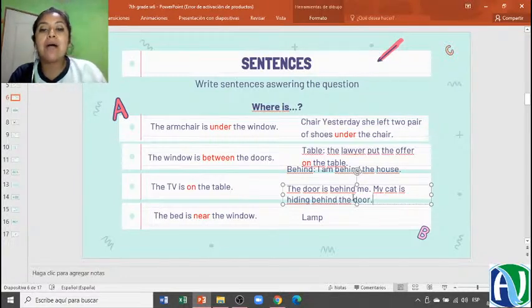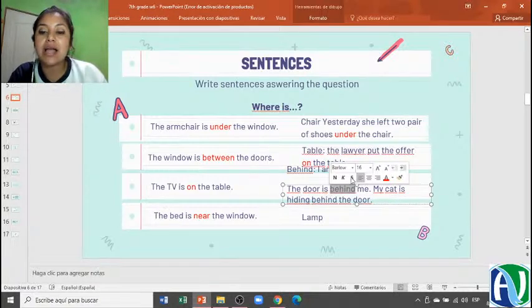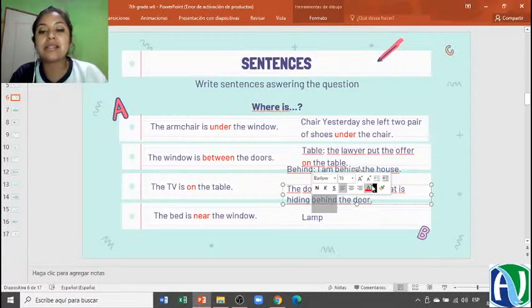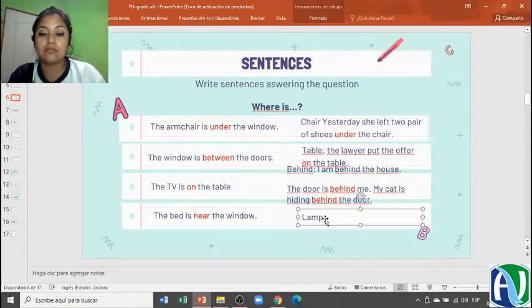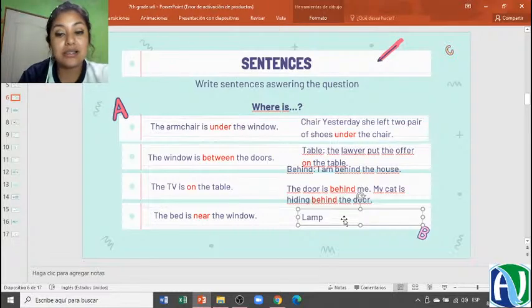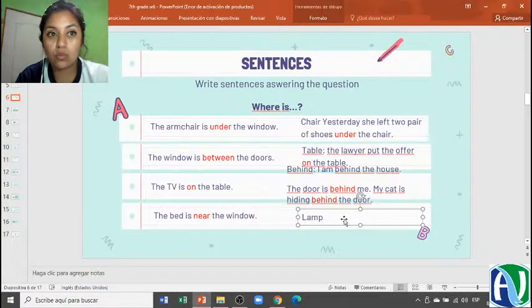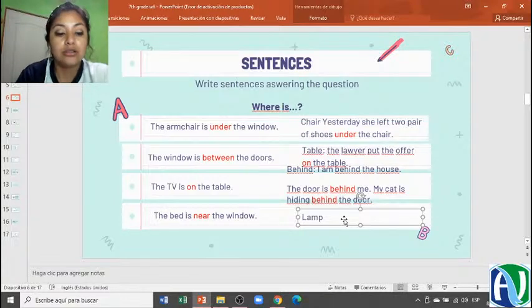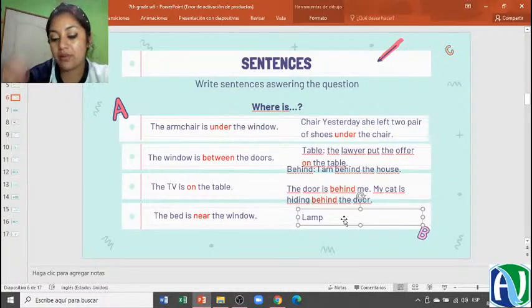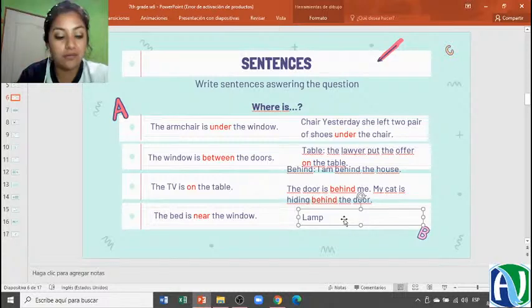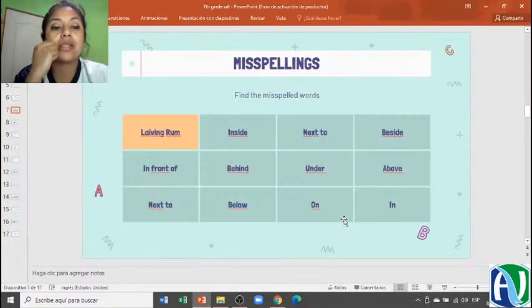Behind. I am behind the house. And the door is behind me. My cat is hiding behind the door. I'm going to make in color red behind because you know that behind is the preposition in this sentence. Behind means in Spanish detrás de. Ok. And the last one is lamp.